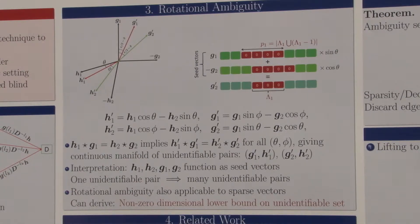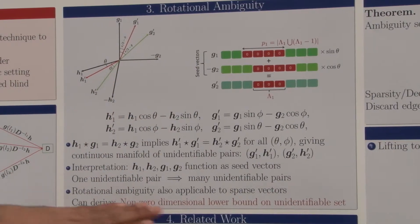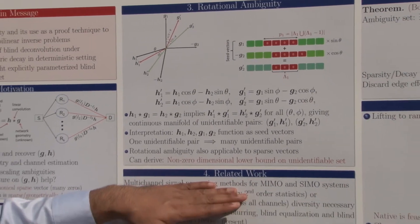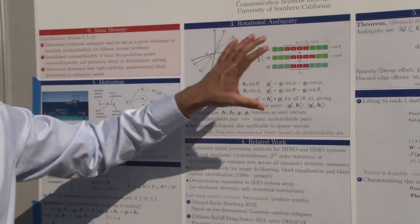We could analyze this further to the point of giving a non-zero dimensional lower bound on the dimension of the ambiguity space.